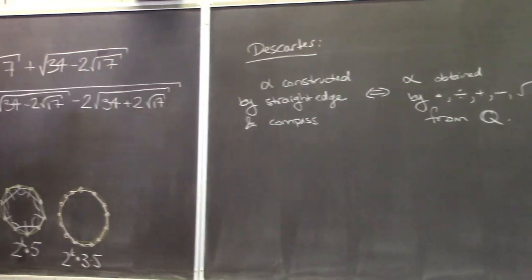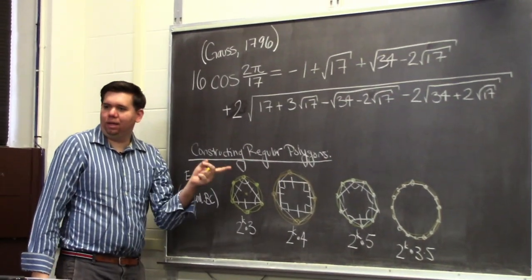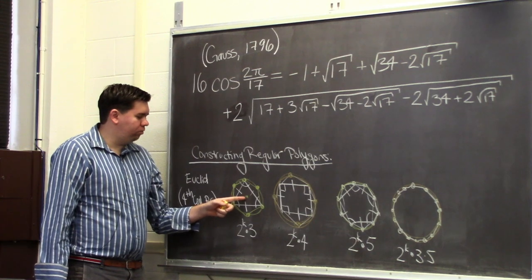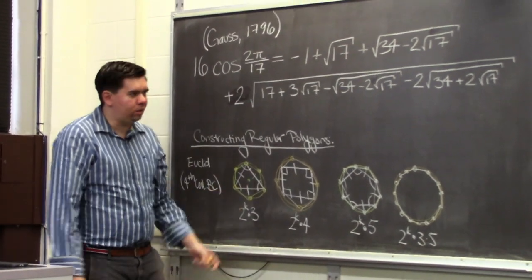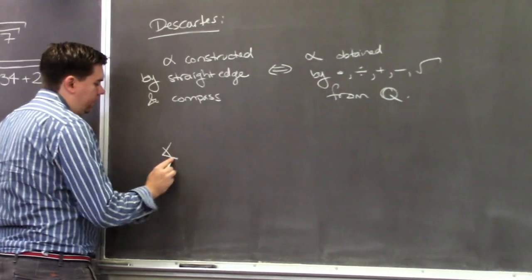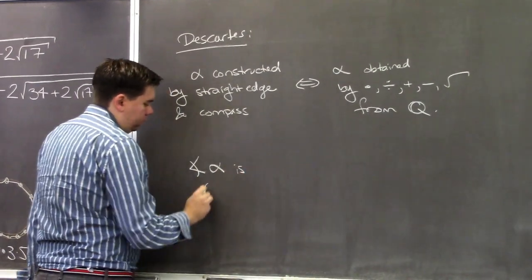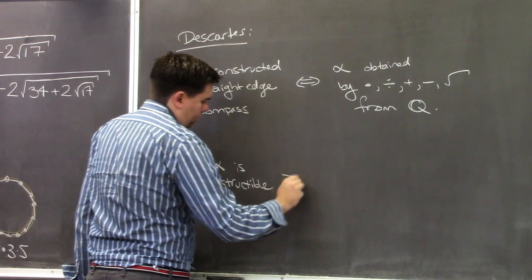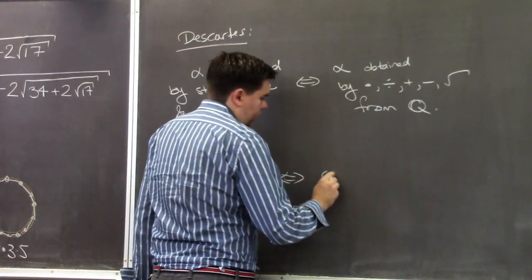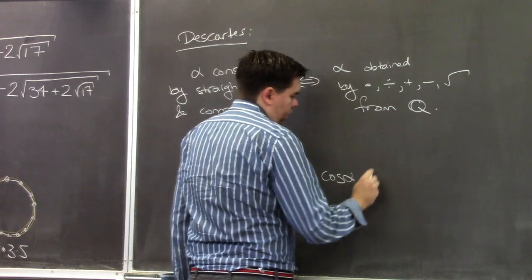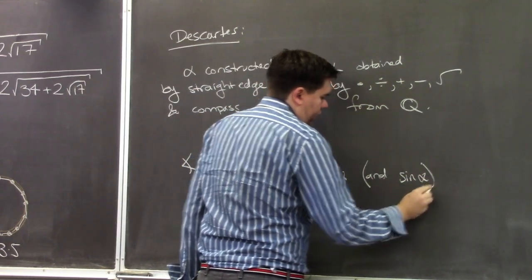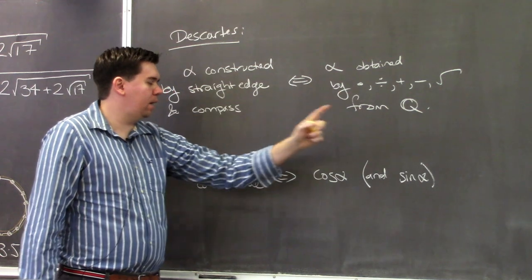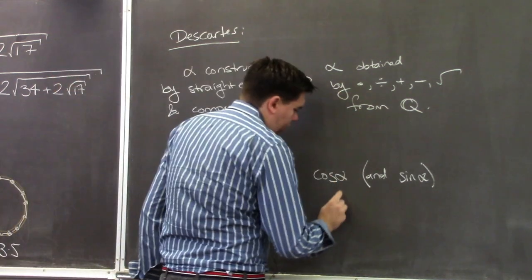Thinking about this, a corollary is that some angle α is constructible exactly when you can construct the values cosine α and sine α from just addition, subtraction, multiplication, division, and square roots. So it's when those trigonometric values are constructible.